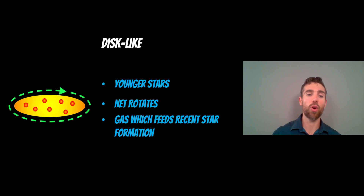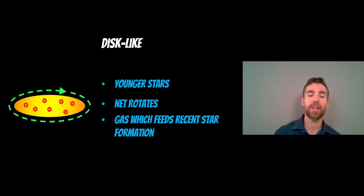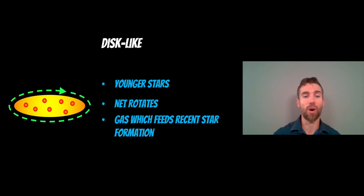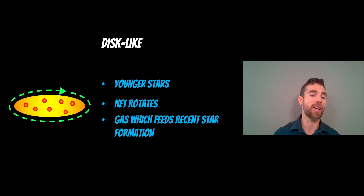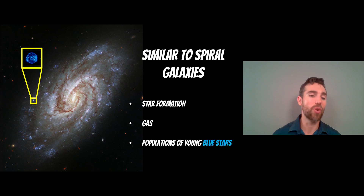The other type is a more disc-like central region — no longer spherical, but flattened. It does have some rotation, so the stars in that central region rotate in a disc-like structure, similar to the outer disc of a spiral galaxy. It has younger, bluer stars and gas, and it's that gas that feeds recent star formation. You can actually think of these disc-like central regions as miniature spiral galaxies — one type is like a little elliptical galaxy, the other like a little spiral galaxy in the center, complete with star formation, gas, young blue stars, and net rotation.